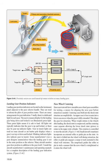Landing gear position indicators are located on the instrument panel adjacent to the gear selector handle. There is usually a dedicated light for each gear. The most common display for the landing gear being down and locked is an illuminated green light — three green lights means it is safe to land. All lights out typically indicates gear up and locked. Gear in transit lights, barber pole displays, and blinking indicator lights indicate gear in transit. Some manufacturers use a gear disagree annunciation when the landing gear is not in the same position as the selector. Many aircraft also monitor gear door position. Consult the aircraft manufacturer's manuals for a complete description of the landing gear indication system.